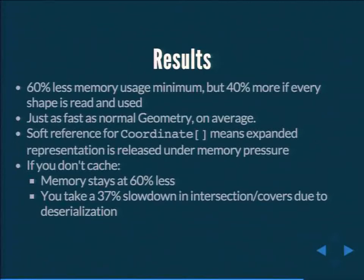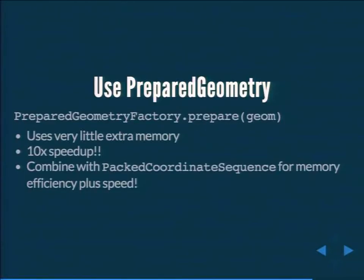If you generate coordinate objects on every use instead of caching, there's roughly a 37% slowdown — significant, but acceptable if you really need minimum memory. The other really cool trick is prepared geometry, which uses very little memory and alternate algorithms for intersections and covers operations — roughly a 10x speed-up in our tests. Combined with the packed coordinate sequence, you get something both memory-efficient and extremely fast. This is what we have deployed to production today.